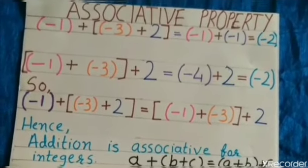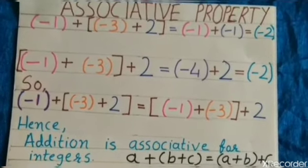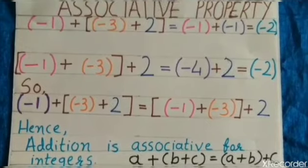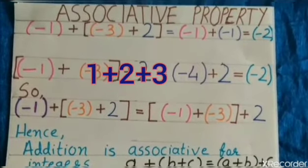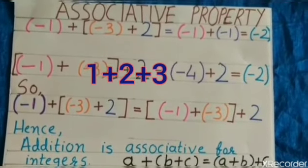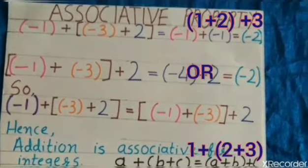Now, students, we have learned associative property for whole number. If we want to add any 3 numbers, so we can't add directly. For example, 1 plus 2 plus 3, then either we have to add first 1 and 2 or 2 and 3.